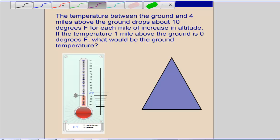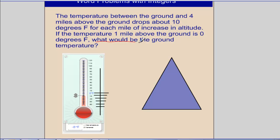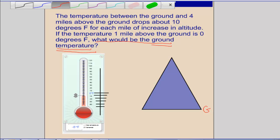The first thing we want to identify is what we're looking for — that's our question: what would be the ground temperature? So we're looking for the ground temperature. I've drawn a very simplistic mountain as a triangle, and we're going to let the bottom of it be our ground. So we're looking for the temperature right here at the base.